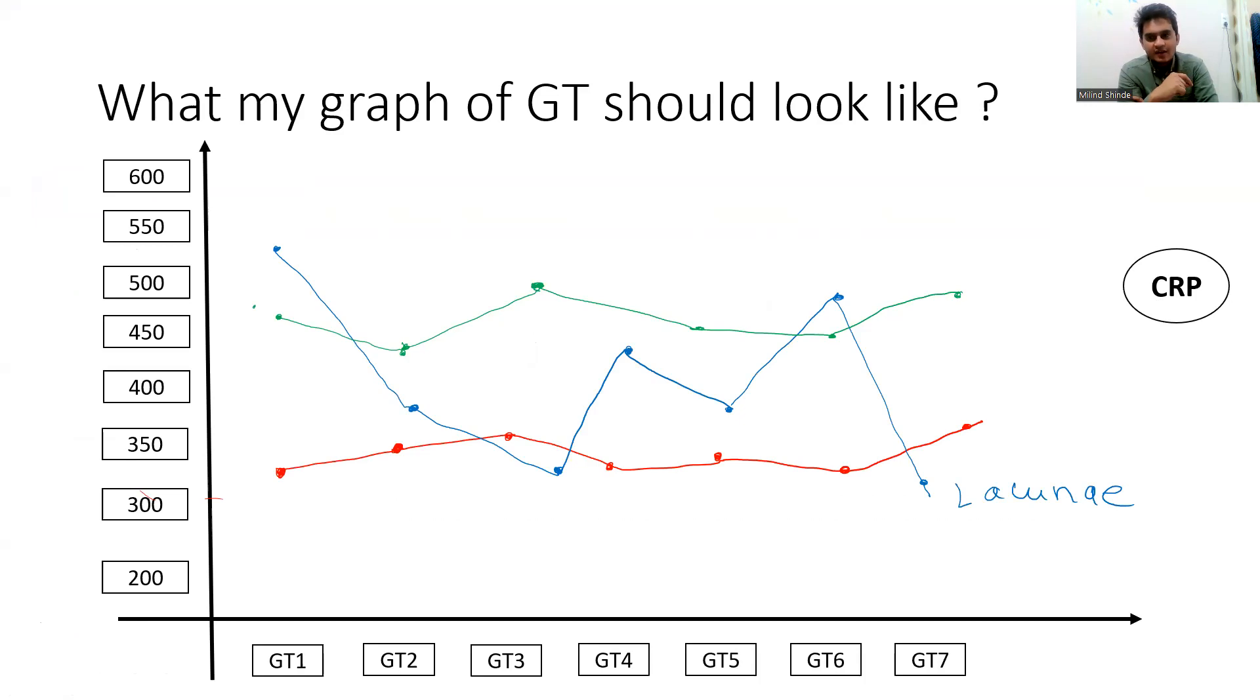In our clinical practice, we use CRP to monitor progression of disease or response to antibiotics. We don't take a single value. Similarly, for GTs, a single score you should not take in a positive or negative way. You have to give multiple GTs and see your trend.